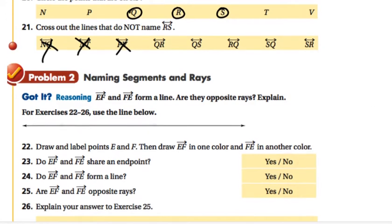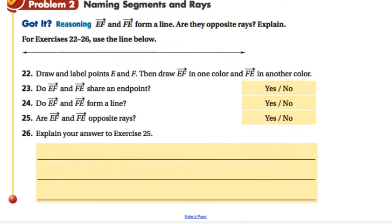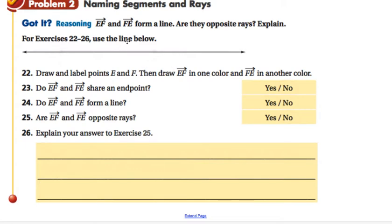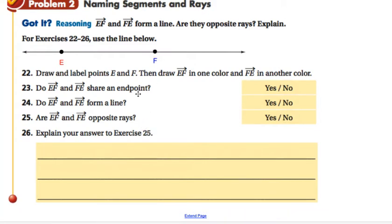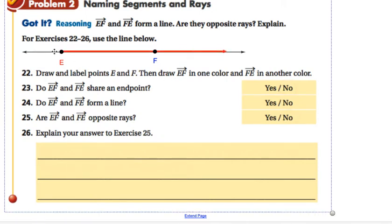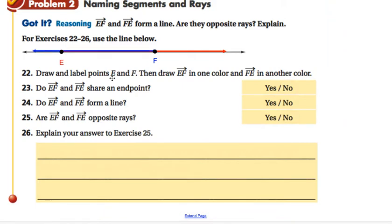Let's move on to problem number two, naming segments and rays. It says EF and FE form a line. Are they opposite rays and explain? First what we're going to do, it says draw and label points E and F. So here's a point E, and then I'll put point F right here. And then it says draw ray EF in one color, and draw ray FE in another color. So here's one ray, and then I'll draw my other ray going the other direction. So ray FE is blue, EF is red.